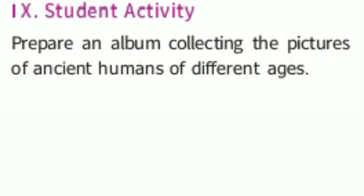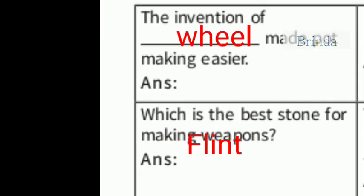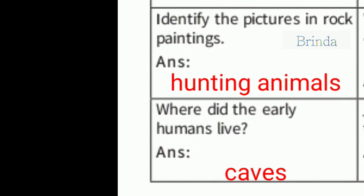Student activity: Prepare an album collecting pictures of ancient humans of different ages — you can do that yourself. Answer grid: The invention of the wheel made pot making easier. Which is the best stone for making a weapon? Flint. Identify the picture in the rock painting.